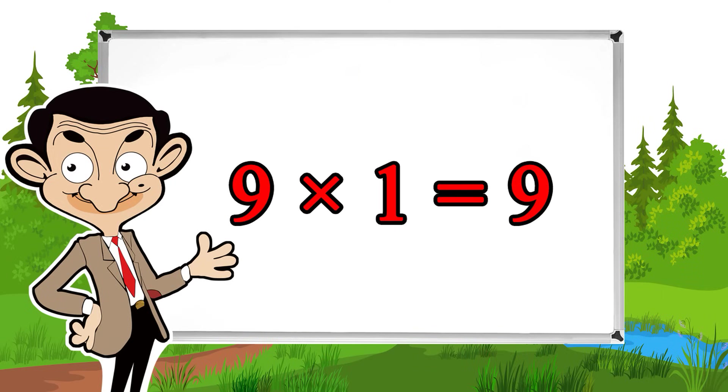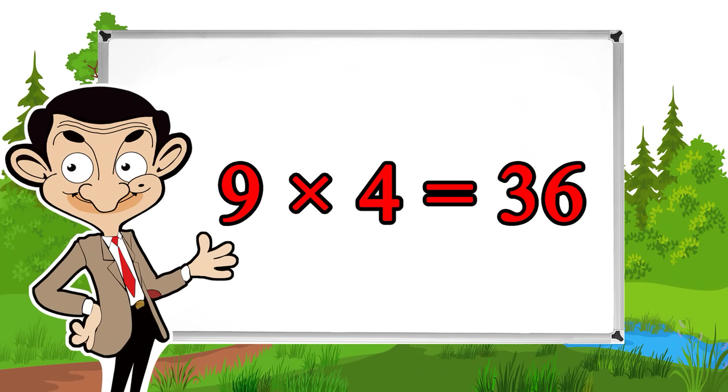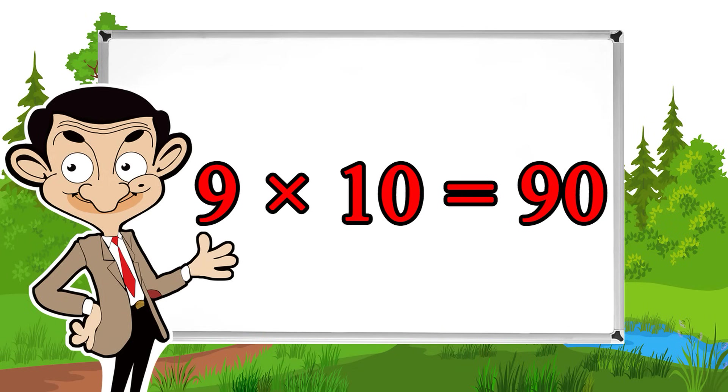9 times 1 equals 9, 9 times 2 equals 18, 9 times 3 equals 27, 9 times 4 equals 36, 9 times 5 equals 45, 9 times 6 equals 54, 9 times 7 equals 63, 9 times 8 equals 72, 9 times 9 equals 81, 9 times 10 equals 90.